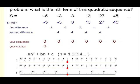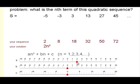Let's have another look at a problem like this. Let's have a look at this one. This time the second difference is 4, so the coefficient of the n squared term is 2.